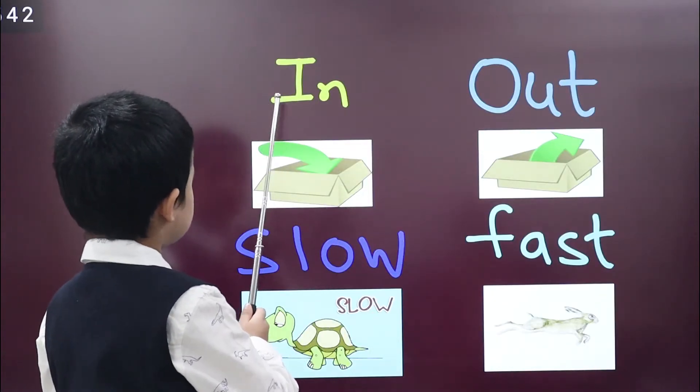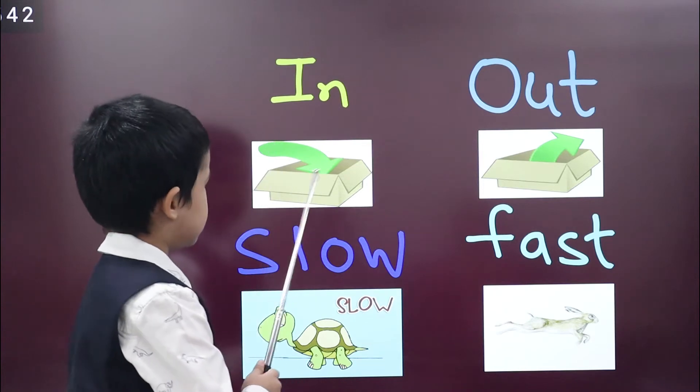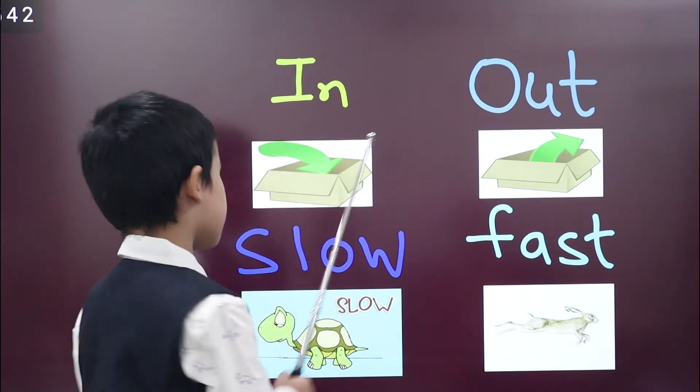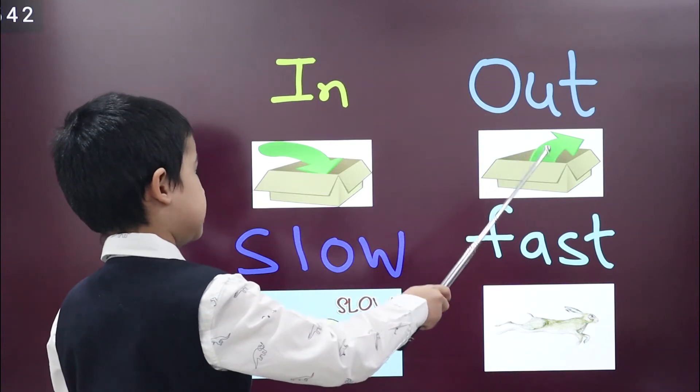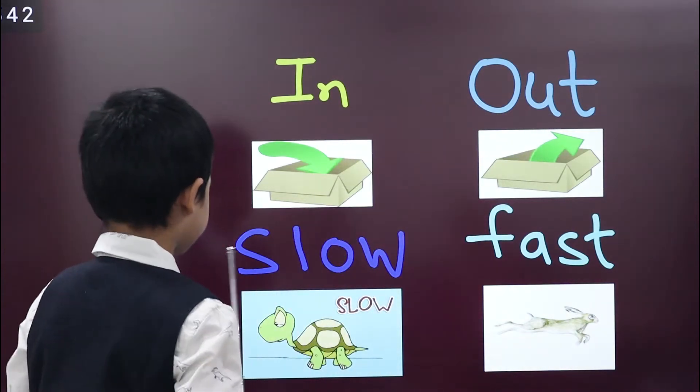This is next word, in. This arrow is showing something is going in the box. Opposite of in is out. This arrow is showing something is going out of the box.